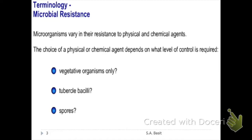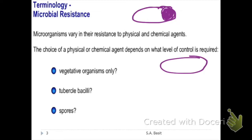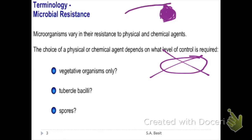The most resistant bacteria are those with endospores, as compared to vegetative bacteria. If bacteria have endospores, they are more resistant. During extreme conditions, the vegetative bacteria will undergo sporulation, but if conditions return to normal, there will be germination. That is why they are the most resistant. Comparing vegetative organisms to organisms with tubercle bacilli, the latter is actually more resistant due to its different cell wall.